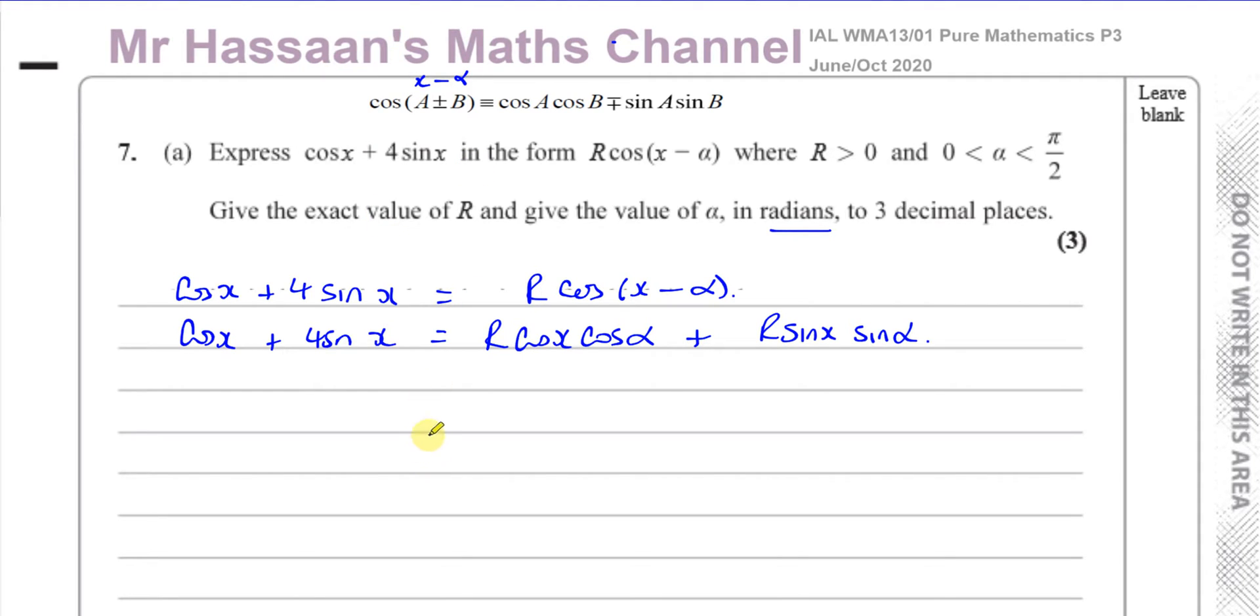If I compare the cosine x's, I can say that one cosine x equals r times cosine alpha. If I compare the sines, I can say that I've got sine x times four, and here I've got sine x times r sine alpha, so four equals r times the sine of alpha. This means that the cosine of alpha is equal to one over r and the sine of alpha is equal to four over r.